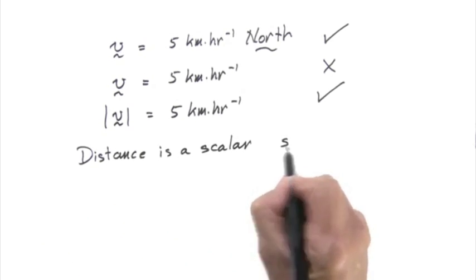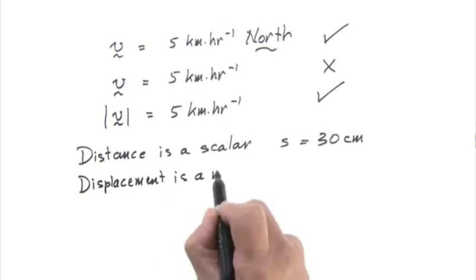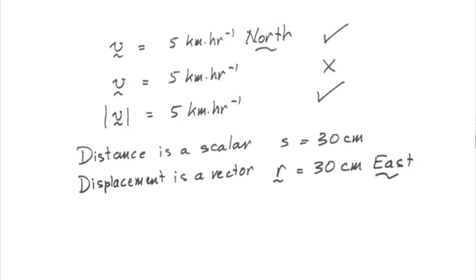Distance is another example of a scalar. 30 centimeters is a distance. In contrast, 30 centimeters east is a displacement.